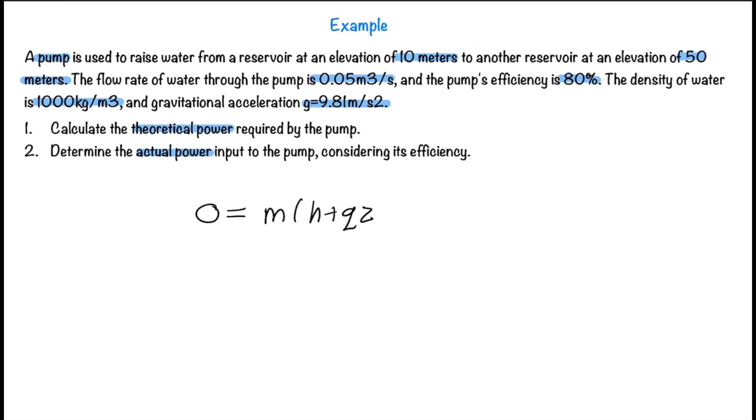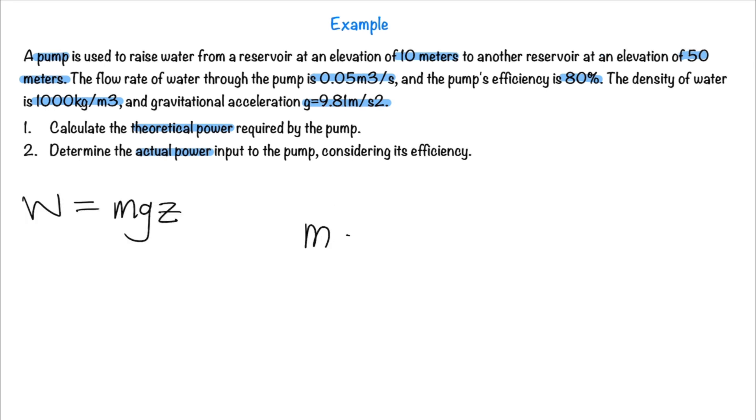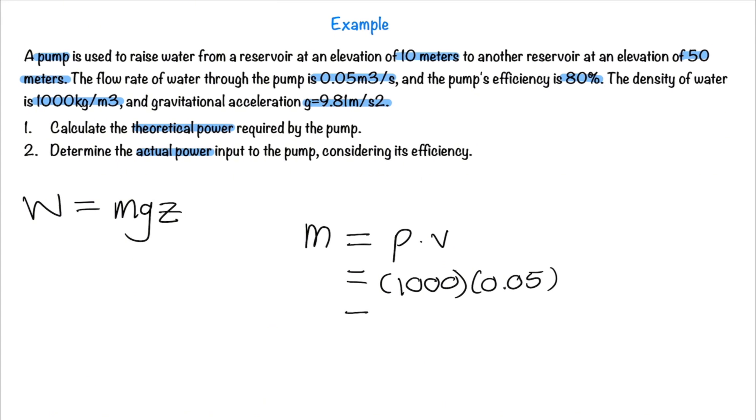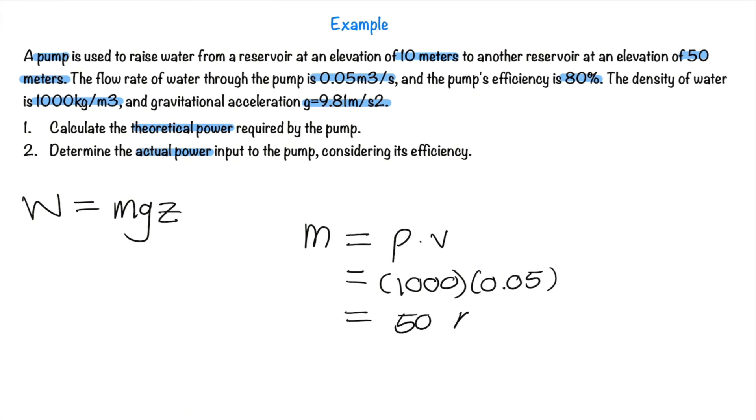First we start by writing the energy balance. There are no inflow streams, only outflow streams, so we can take the first term out. Then we neglect the enthalpy and bulk kinetic energy. We can rewrite this energy balance to get an equation for the work. We don't have the mass, but we have the density and the volumetric flow rate, which we can use to calculate the mass. We plug in the values and get a mass flow rate of 50 kilograms per second.